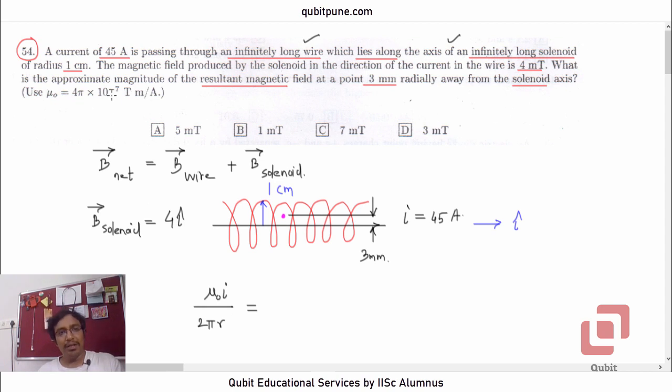Now, because μ₀ is 4π × 10⁻⁷ here, μ₀/2π will be 2 × 10⁻⁷ times current is 45 amperes. What about radius r? 1 cm? Don't take 1 cm. That is the solenoid radius, coil radius. This one, 3 mm. So 3 × 10⁻³. So 2 times 45 is 90. 90 upon 3 is 30, times 10⁻⁴. Or 3 × 10⁻³, or 3 millitesla.